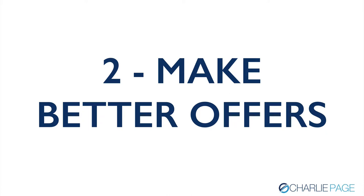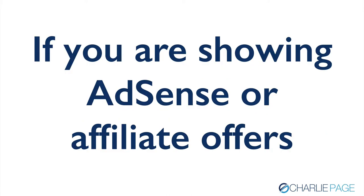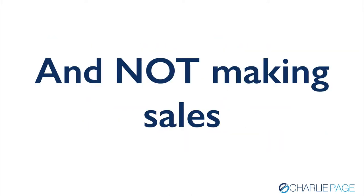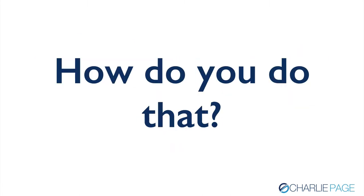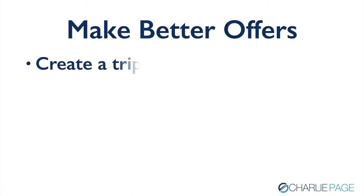Number two: make better offers. If you want to monetize your blog and make more money automatically, you need to make better offers. If you're showing AdSense or affiliate offers on your site and you're not making sales — and most people aren't — it's time to take your game to a higher level. Number one: create a tripwire offer. A tripwire offer is a low-cost offer that changes the relationship of the reader from just being a reader to being a customer. Whether that's $1, $7, or $10, it doesn't really matter. What matters is the nature of the relationship changes when they buy — they're a customer now, and they're much more likely to buy again.